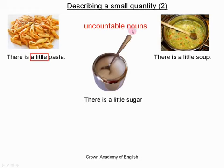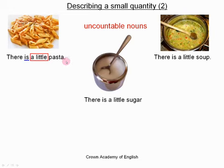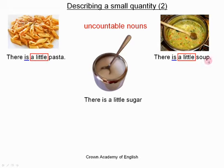Since an uncountable noun can only be singular, the verb is singular too. So we say 'there is a little pasta' — we do not say 'there are a little pasta.' The noun stays in the singular form; there is no S. We never say 'pastas,' for example. It is the same with butter and sugar — uncountable nouns that are just a big mass of product. We use 'a little,' the noun stays singular, and the verb is in the singular form: 'there is.'